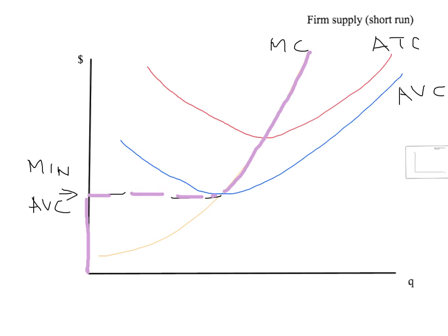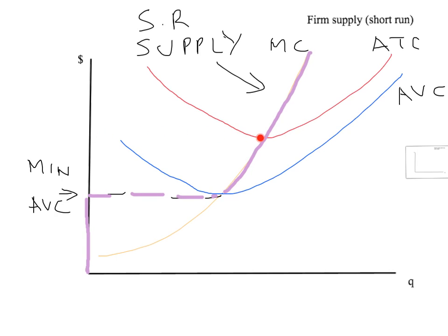The purple line here represents the firm's short run supply curve. It tells us for any given price how many units the firm would like to supply in the short run. One other thing to note: the supply curve is discontinuous. It's zero until price hits minimum average variable cost, then it jumps to a positive level when price goes above minimum average variable cost.